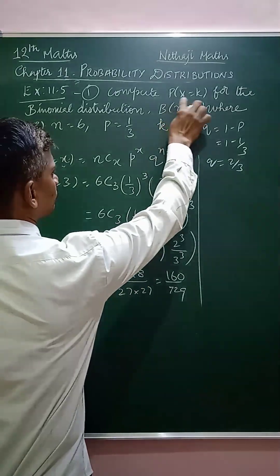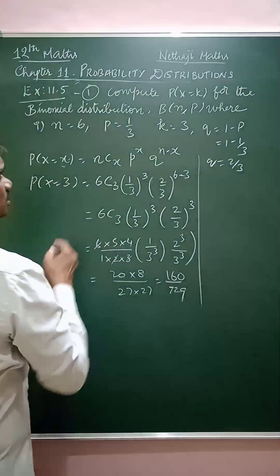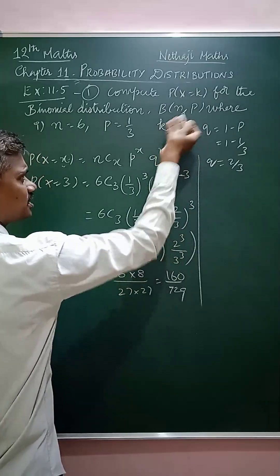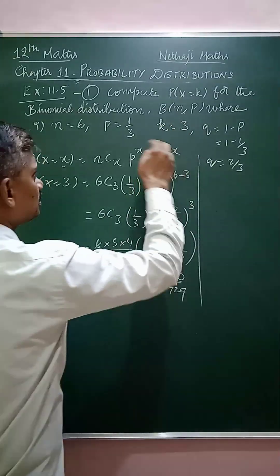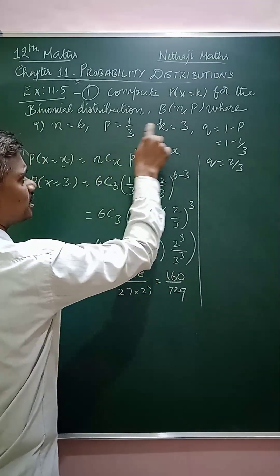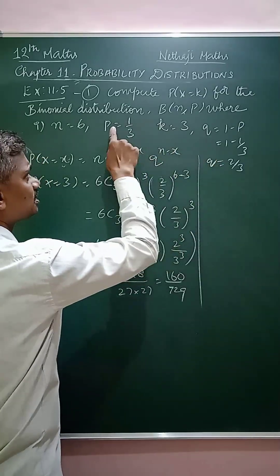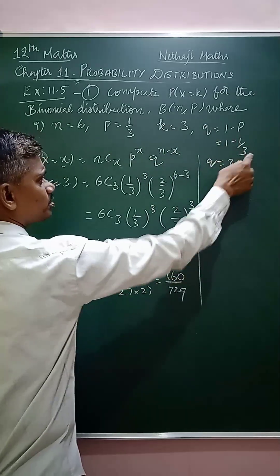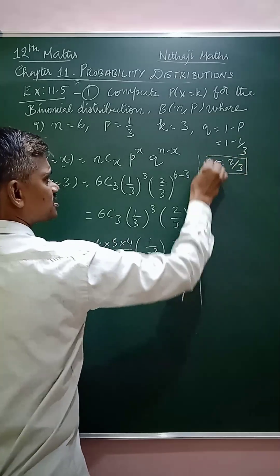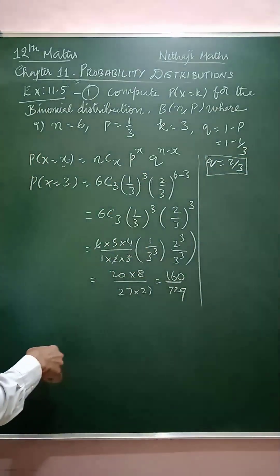In our question, P(x=k) where k equals 3, so x equals 3. We have n equals 6, p equals 1/3, k equals 3, but we need to find q. Q is the probability of failure, which is 1 minus p, so 1 minus 1/3 gives 2/3.